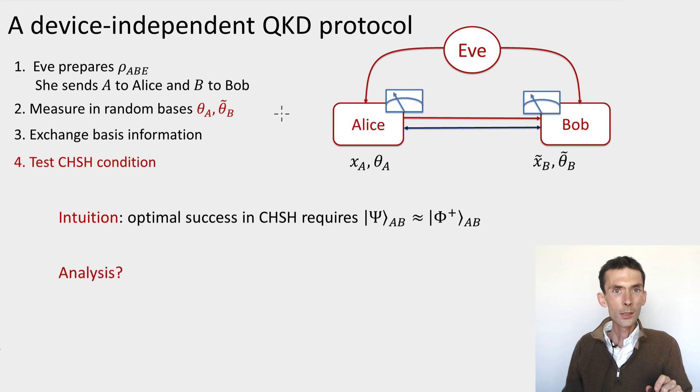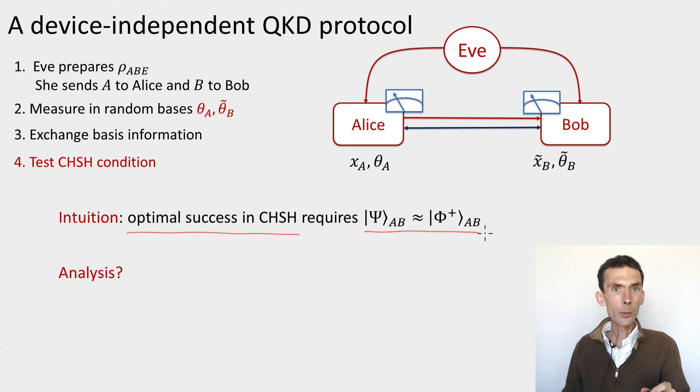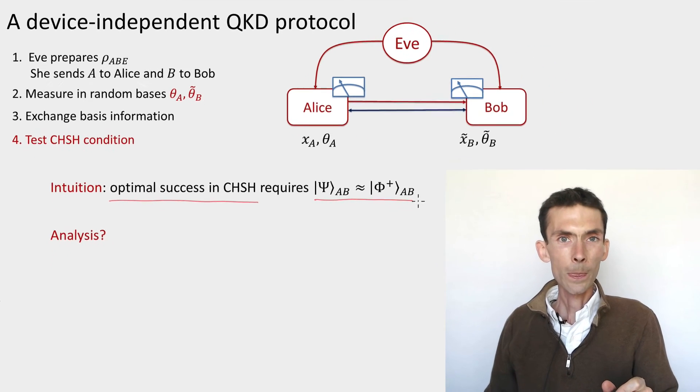So the intuition we already saw. The intuition is the same as before, except that now we didn't know what the measurements were. So we changed the test that was used by a new test, which is the CHSH test. And the intuition we want to use is that as long as we verify that devices perform close to optimal in the CHSH test, then the state that is shared between these devices is an EPR pair. And if it's an EPR pair, in particular, it cannot be correlated with Eve's system and so we'll be able to derive security. That's the intuition.